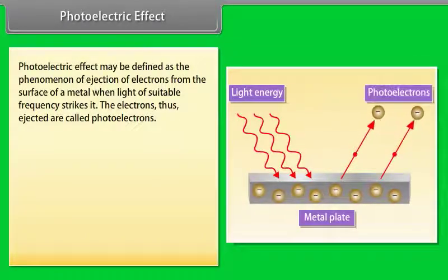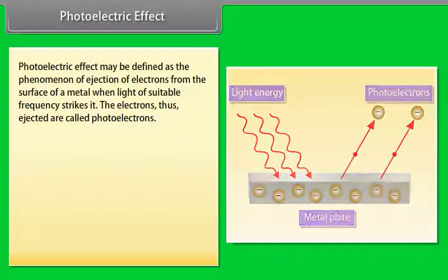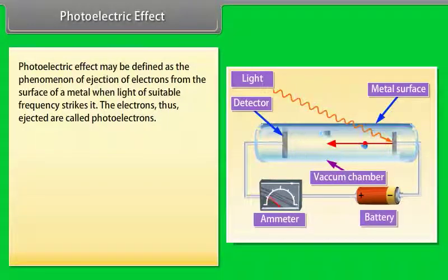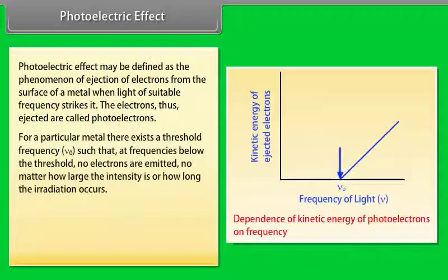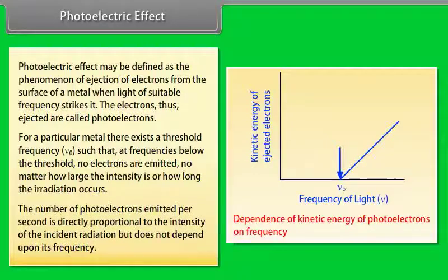Photoelectric effect is the phenomenon of ejection of electrons from the surface of a metal when light of suitable frequency strikes it; these electrons are called photoelectrons. For a particular metal, there exists a threshold frequency ν₀ such that at frequencies below the threshold no electrons are emitted, no matter how large the intensity or how long the radiation occurs. The number of photoelectrons emitted per second is directly proportional to the intensity of incident radiation but does not depend on frequency.